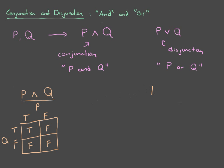Let's define P or Q now. We're going the same way with the truth table. We have four possible configurations.